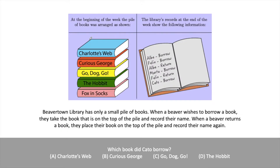Beavertown Library has only a small pile of books. When a beaver wishes to borrow a book, they take the book that is on the top of the pile and record their name. When a beaver returns their book, they place their book on the top of the pile and record their name again. Which book did Cato borrow? Charlotte's Web, Curious George, Go Dog Go, or The Hobbit?